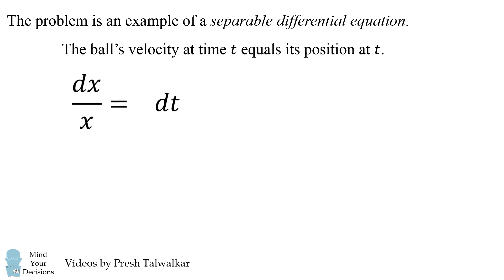We can now integrate both sides of this equation and we get that the natural log of the absolute value of x equals t plus an arbitrary constant. We group all the constants on the right hand side.